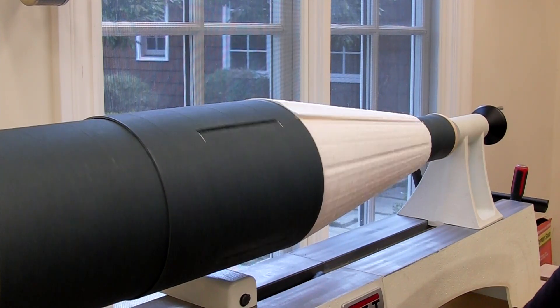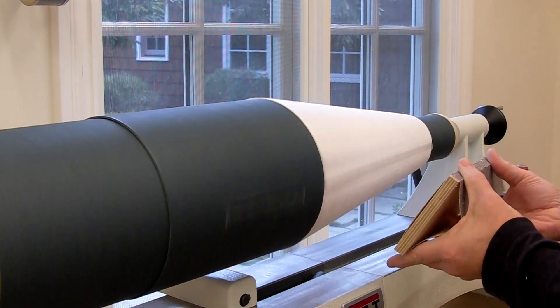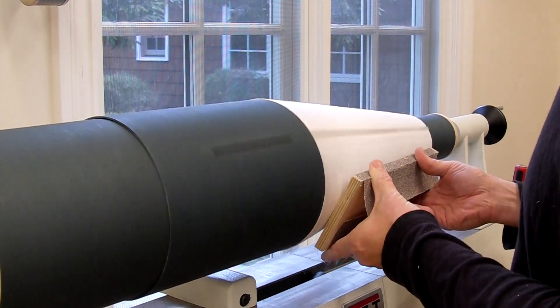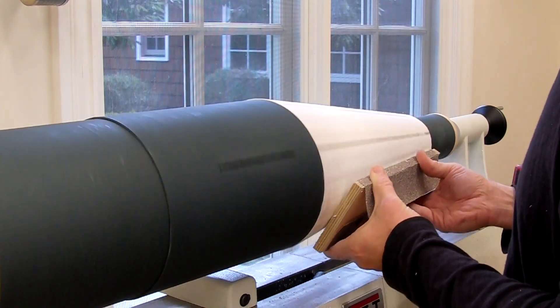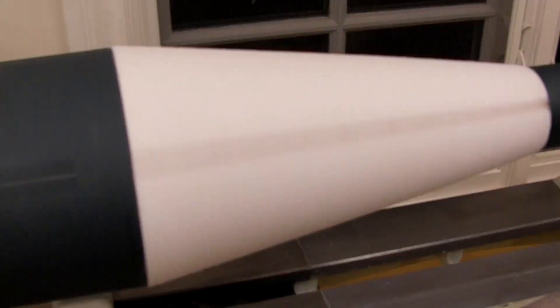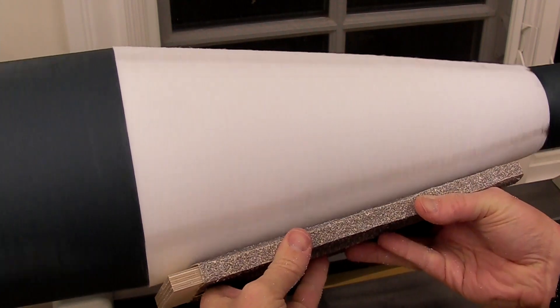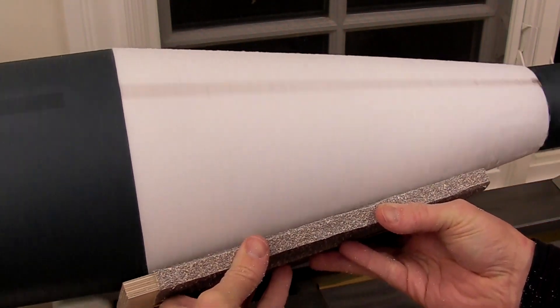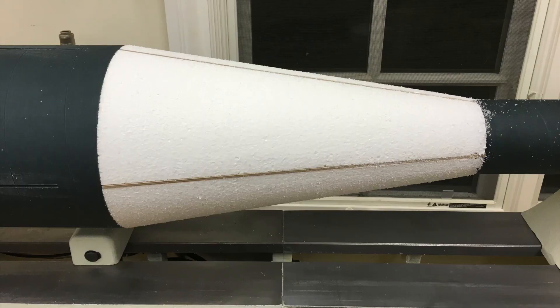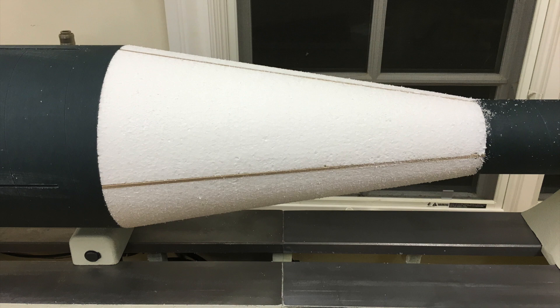Of course, you can sand by hand, but if you can do it on a lathe, it's easier and more accurate. At first it's really bumpy as you're taking off the high spots and eventually you'll get down smooth. Go slow and check your work frequently because coarse sandpaper takes off a lot of foam. You'll know when you're done because the foam will be down to the ribs and the ends will taper down to the tube.